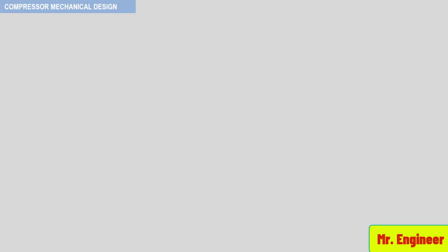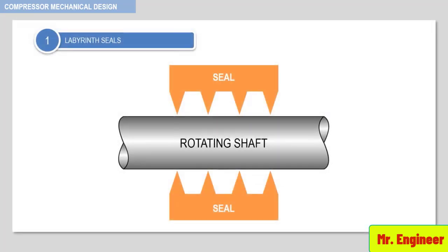The most common type of compressor seal is the labyrinth seal. It is most prevalent on air compressors and some gas applications. The sealing action is achieved by means of labyrinth teeth, which restrict the flow of gas. The teeth do not touch the shaft but maintain a close clearance. They are made of soft metal so that the shaft is not damaged on accidental contact.